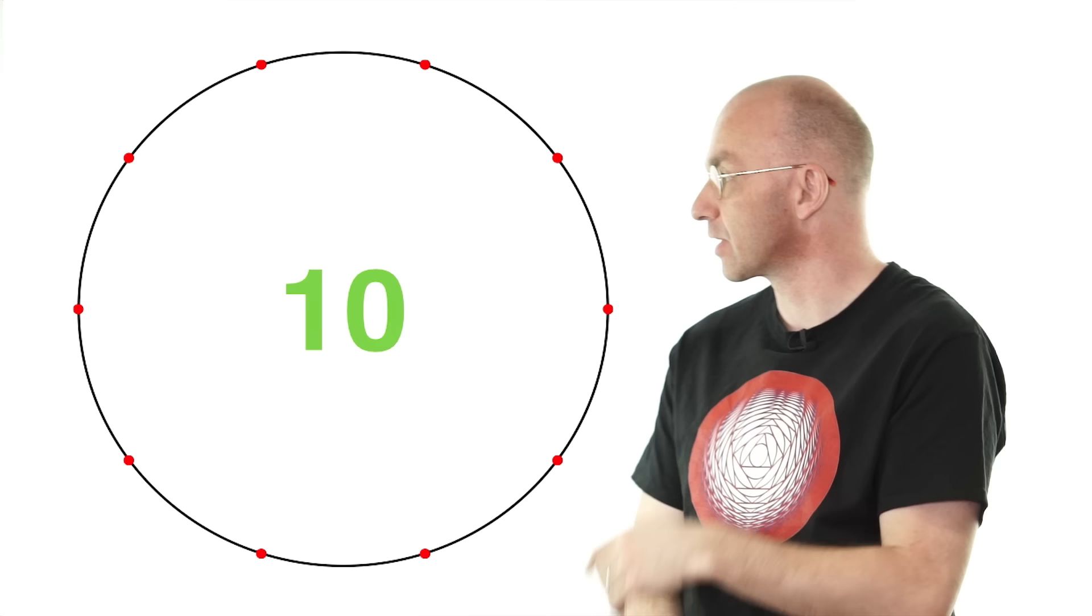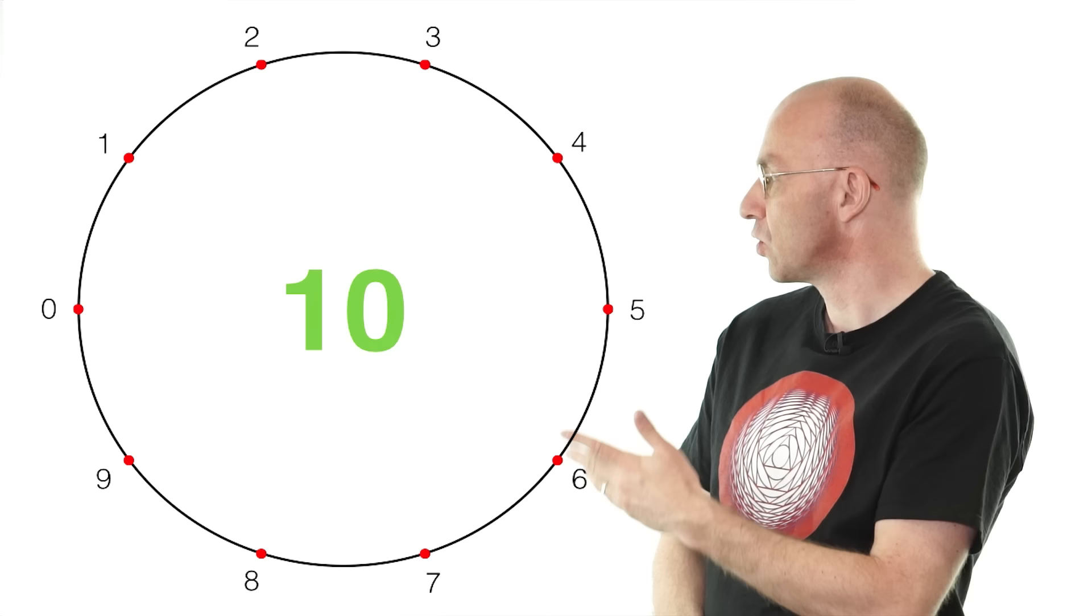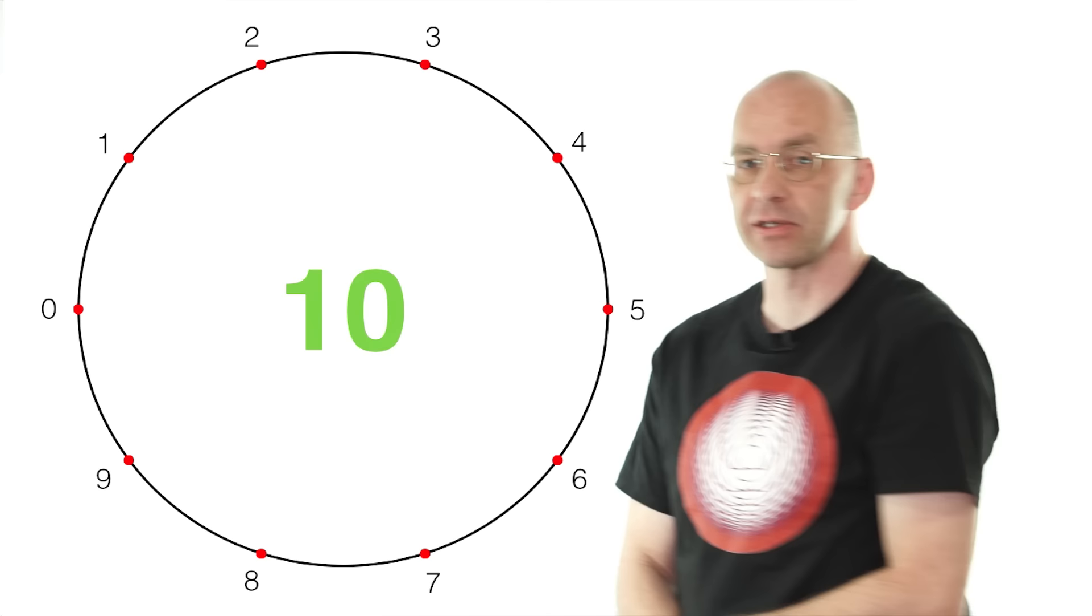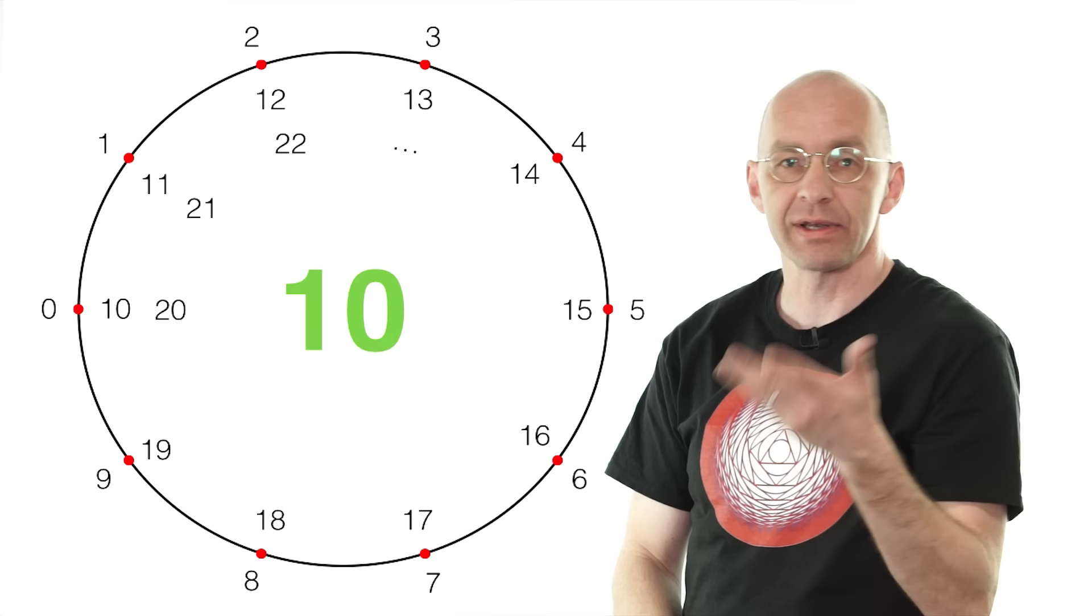So then with 10, we put 10 points on the perimeter here, equally spaced, and then we label them starting with zero: 0, 1, 2, 3, 4, 5, 6, 7, 8, 9. Then 10 we also want, so we put that right there again. So that's also 10, that's also 11, 12, 13, 14, 15, and so on. So this guy here stands for 1, 11, 21, 31, and so on.